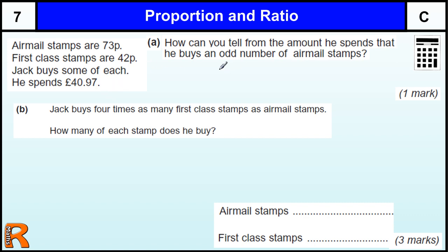How can you tell that he buys an odd number of airmail stamps from the amount he spent? Well, you need to put something along the lines, because amount spent equals odd number, therefore airmail must equal odd.